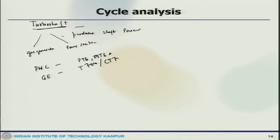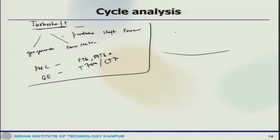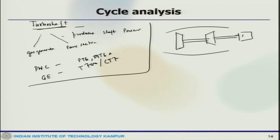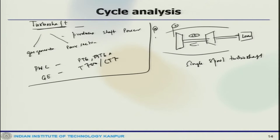Looking at the analysis of a turbo shaft engine, if you consider a single spool engine, the schematic shows a compressor, a turbine, and a load. The station numbers are: A, 2, combustion chamber at 3, then 4 and 5. The load is driven by the same gas generator shaft or driven by a free turbine. This is a single spool configuration.